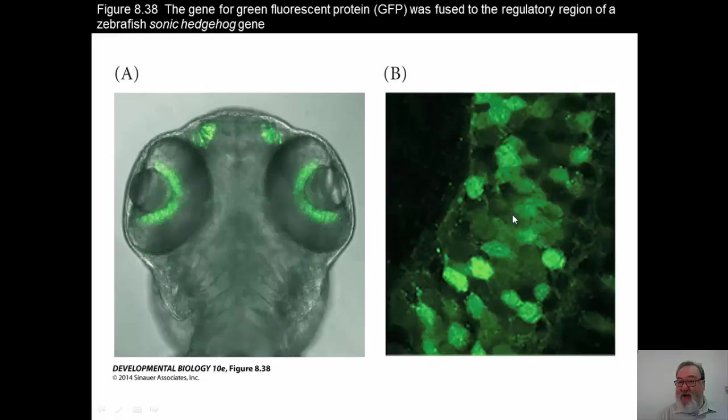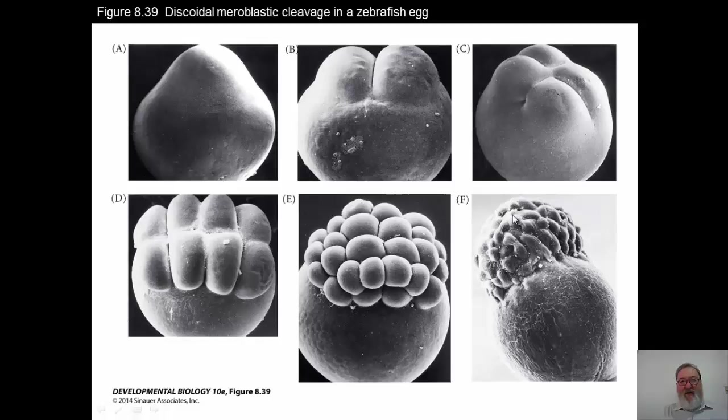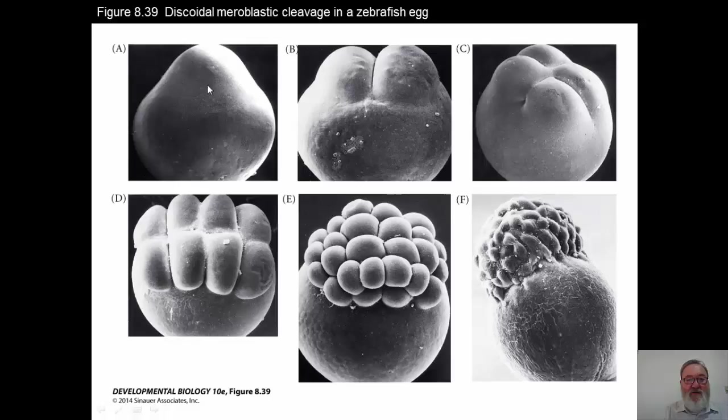Let's now look at cleavage in zebrafish. Although the cleavage is very different from what you see in Xenopus, once cleavage takes place, the actual embryology of that developing embryo is pretty similar — very similar to Xenopus. This is a beautiful representation using scanning electron microscopy, and here you can see a one-cell stage. Here's the animal cell up here, and here's the yolk cell, representing the vegetal part of the embryo at this early stage.